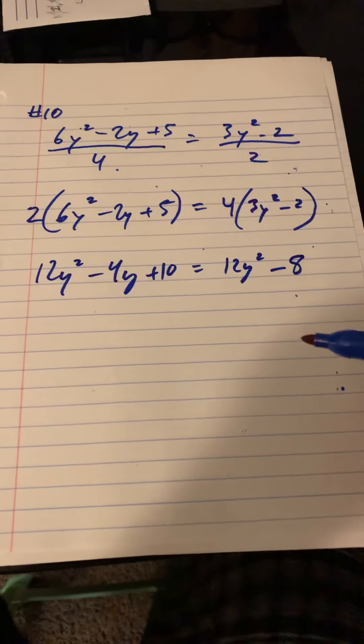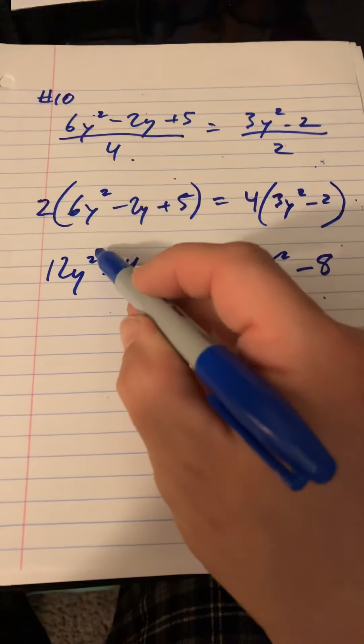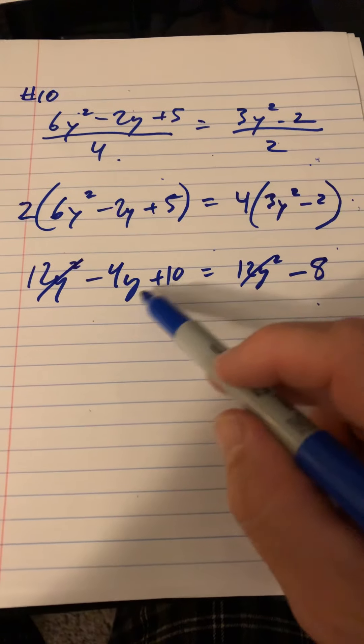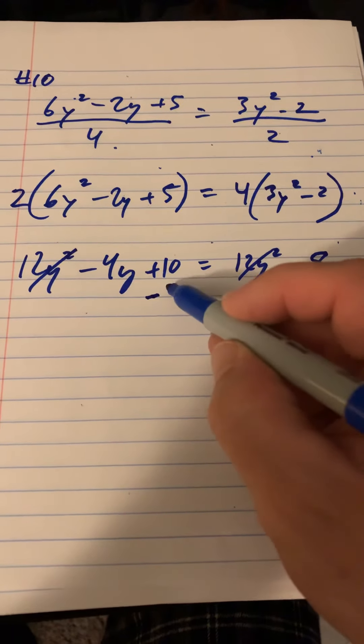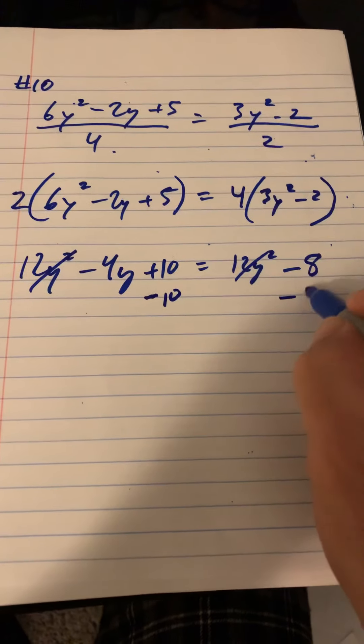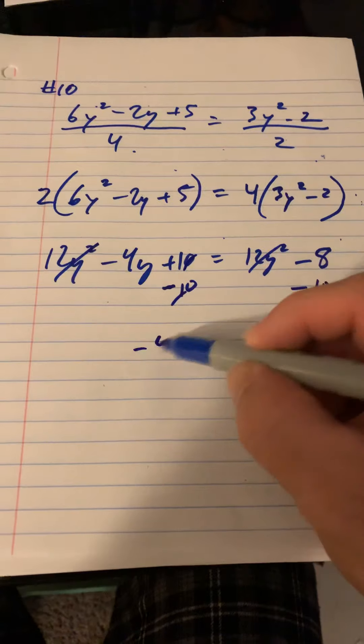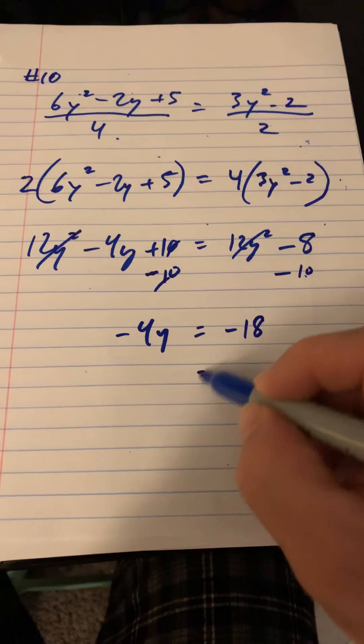Now if I were to subtract 12y squared from both sides they would cancel out. So that leaves me with negative 4y plus 10 equals negative 8. Let's go ahead and subtract that 10 there. So we get negative 4y equals negative 18.